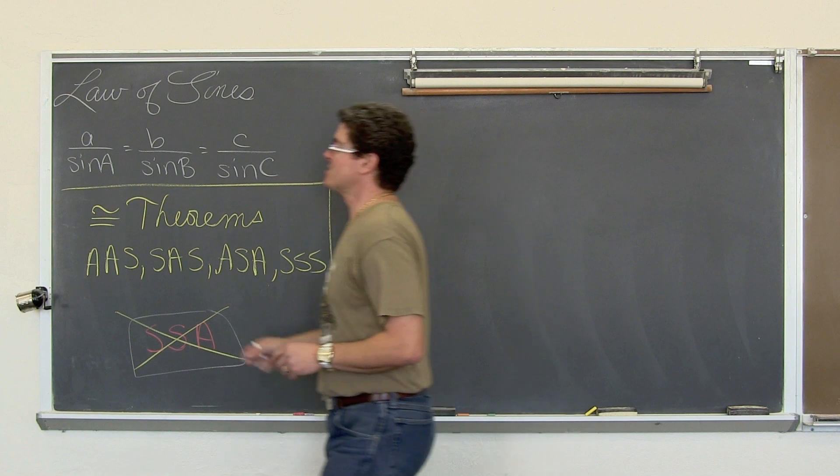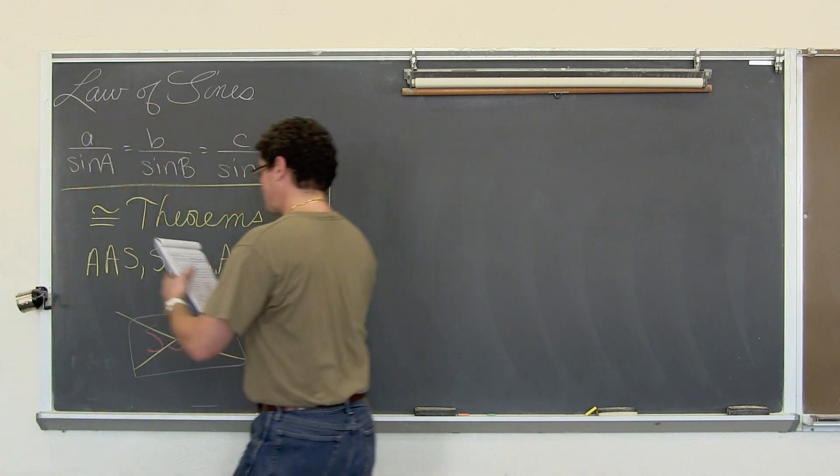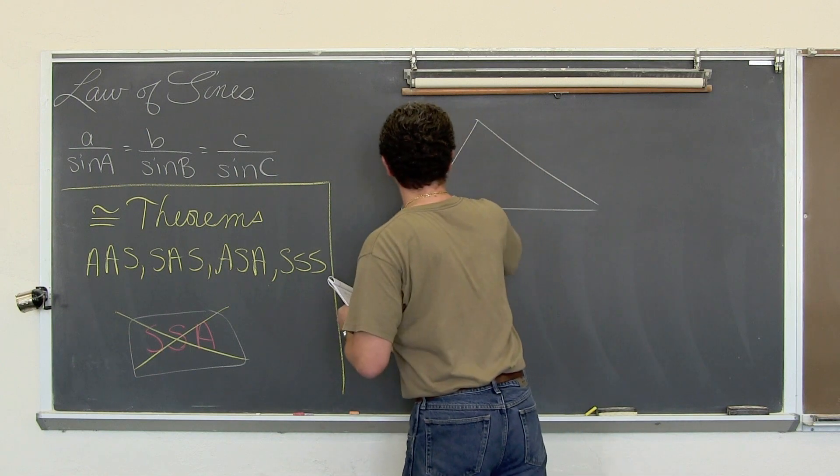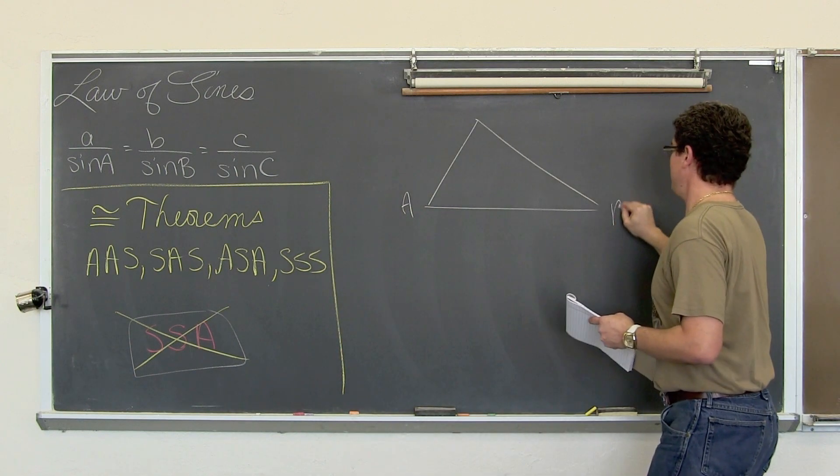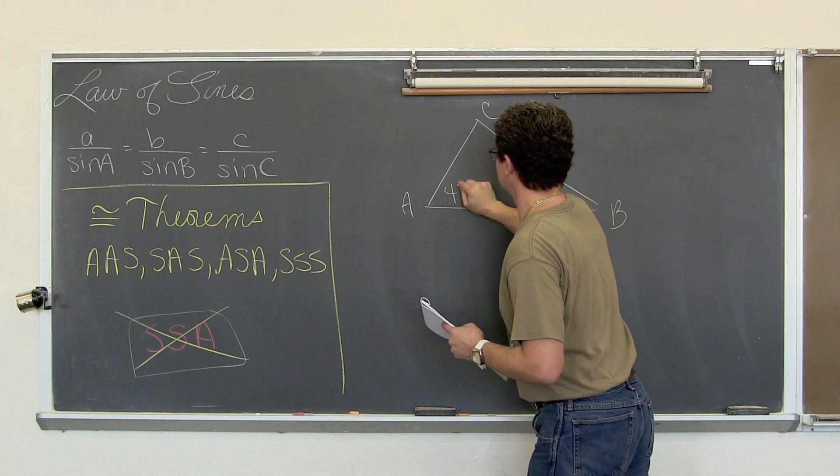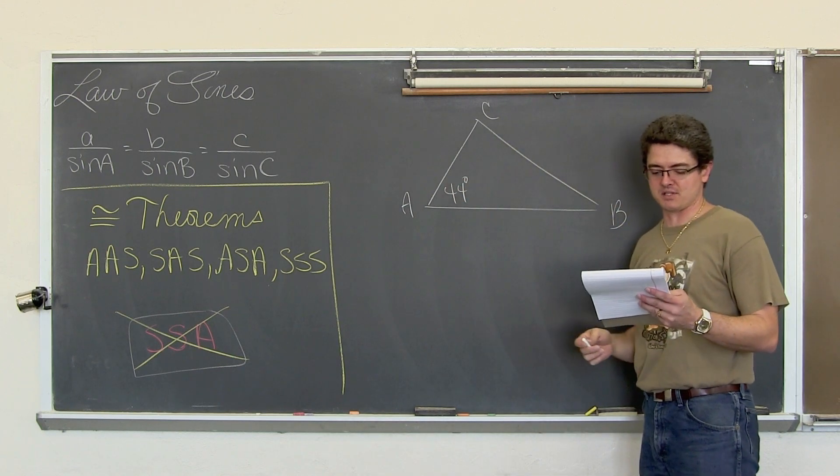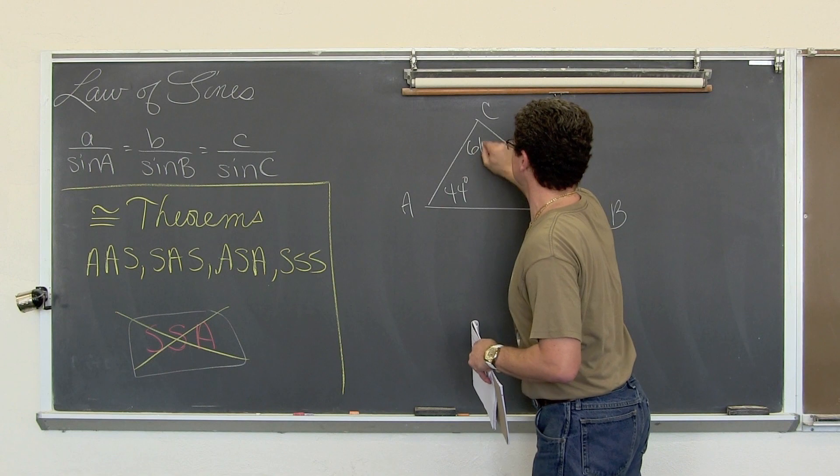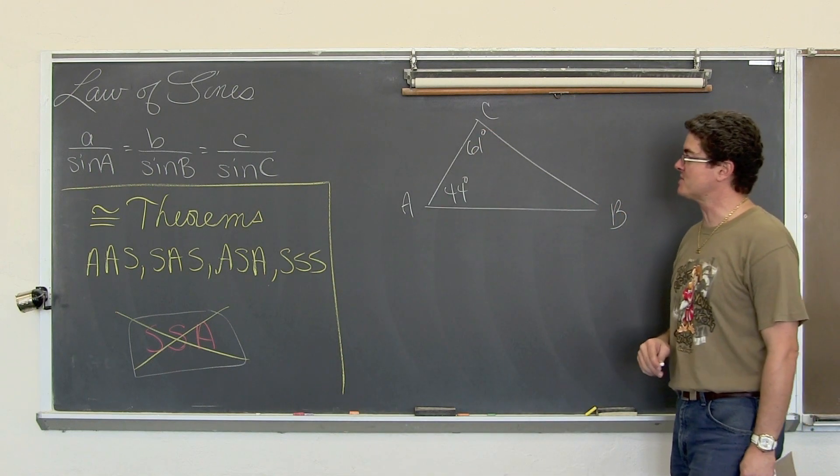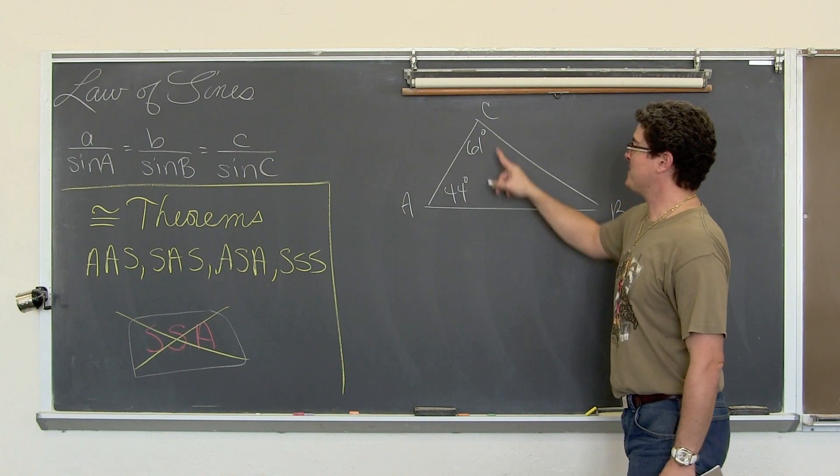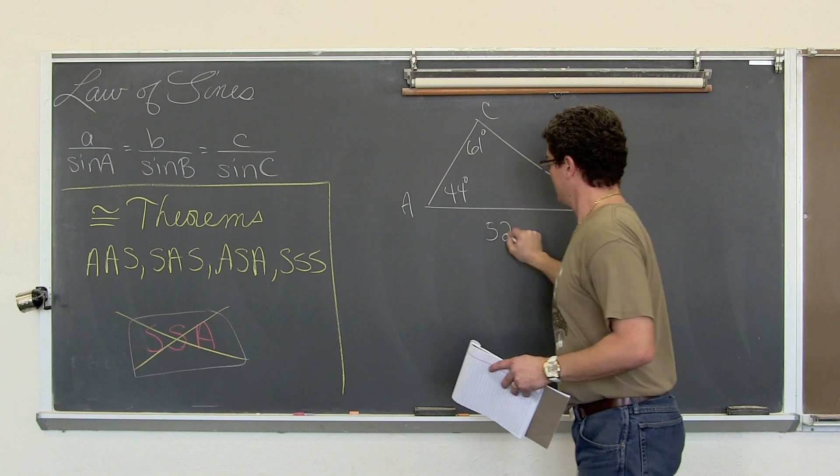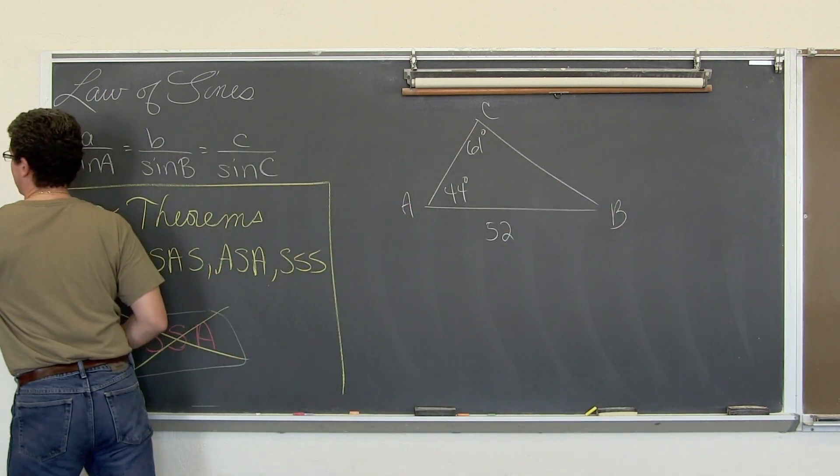Our first example is going to be a triangle looking like this. We have angles of A, B, and C, and I am not drawing this to scale. Never trust a drawing to scale unless it says that in a math book. We have an angle A of 44 degrees, angle C of 61 degrees, and opposite angle C, we have side c which is 52 units.